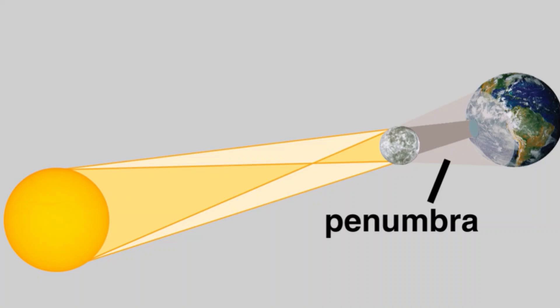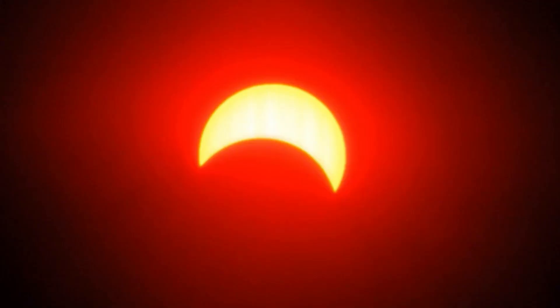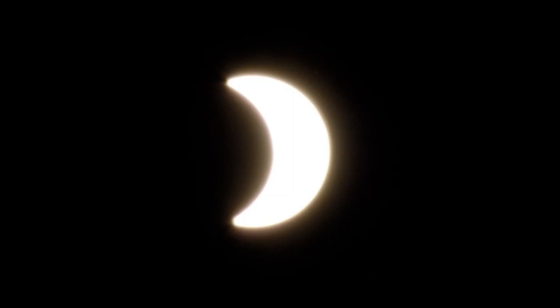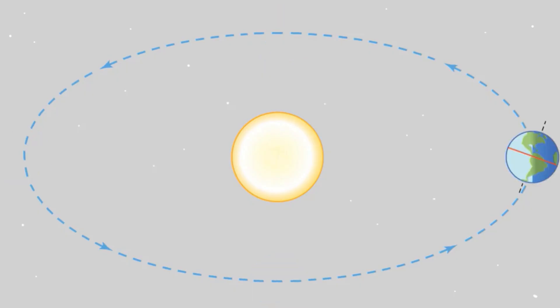To observers on Earth who are within the penumbra, the sun appears to be partially covered by the moon, so those observers see a partial eclipse. The Earth revolves around the sun in a slightly elliptical orbit.